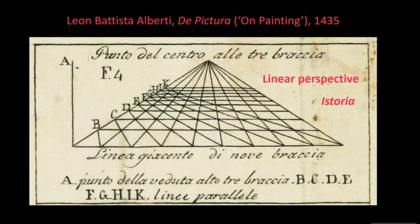For example, Alberti demanded that figures be placed convincingly in space — if they are in the foreground, they're larger; in the middle ground, slightly smaller. He also said in his text that we shouldn't use gilding anymore, but should create the illusion of gold in yellow paint. He limits the number of figures that painters should include in a given historia — nine or ten and no more. So Alberti codified the system that artists of the Renaissance before him had been developing in order to elevate the status of painters from their previous incarnation as medieval craftsmen to a newly learned liberal artist.